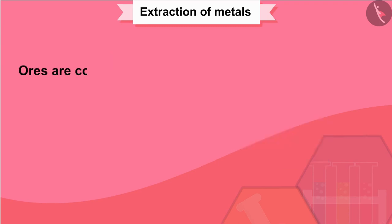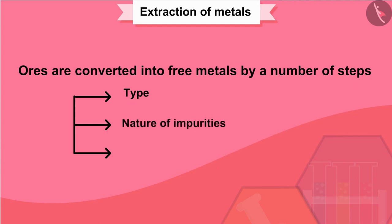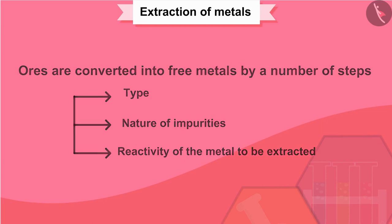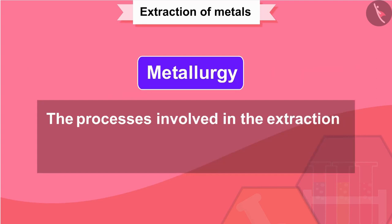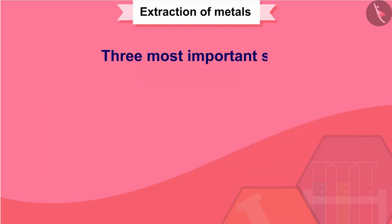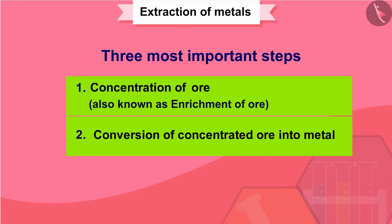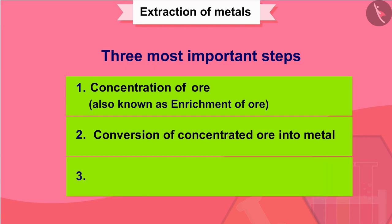Ores are converted into free metals by a number of steps, which depend on the type of the ore used, nature of the impurities, and reactivity of the metal to be extracted. The processes involved in the extraction of metals from their ores and refining are known as metallurgy. It involves three most important steps: concentration of ore, also known as enrichment of ore; conversion of concentrated ore into metal; and refining, i.e., purification of metal.